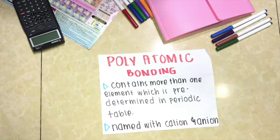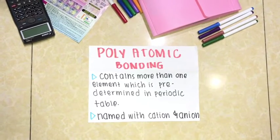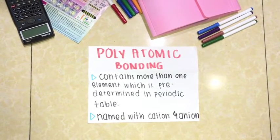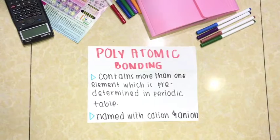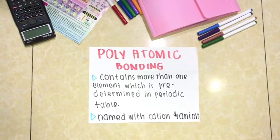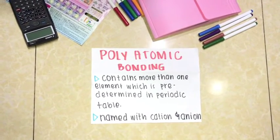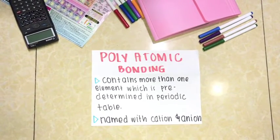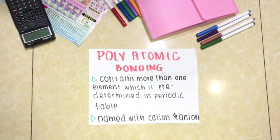Polyatomic bonding contains more than one element, which is predetermined in the periodic table. Elements are named with a cation and an anion.